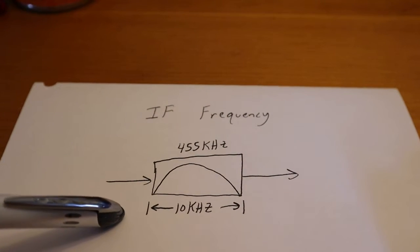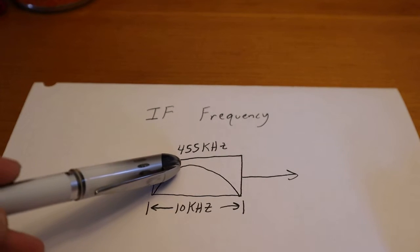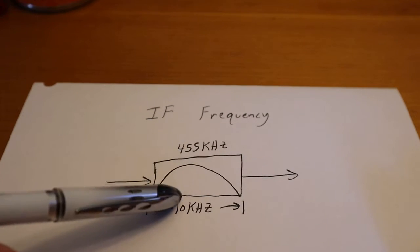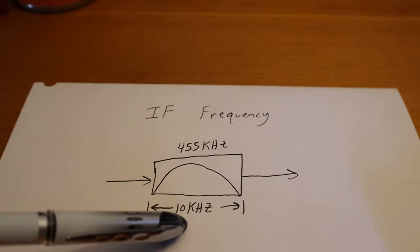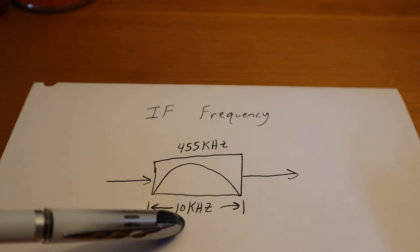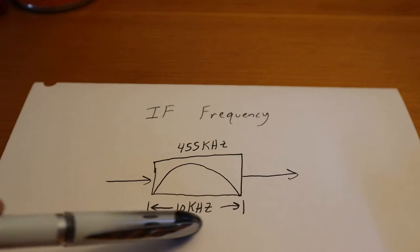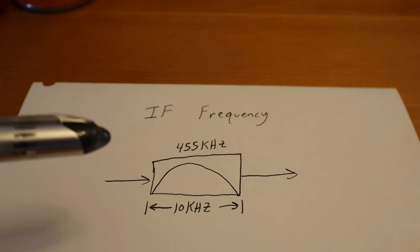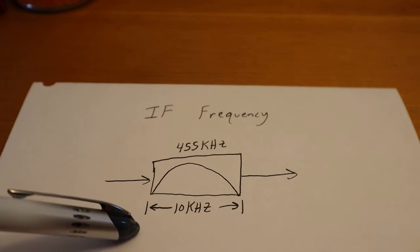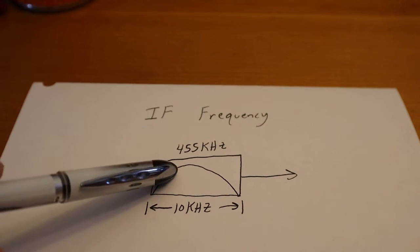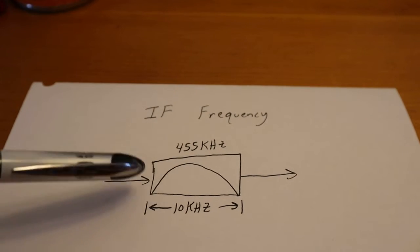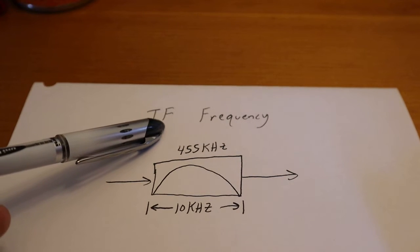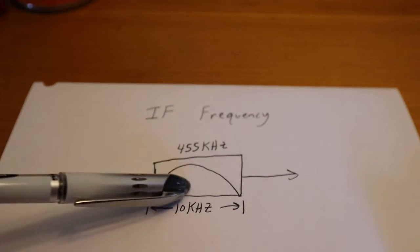We essentially now need to make a filter with a fixed center frequency and a fixed span. So if we're interested in AM radio waves, we would want the span to be about 10 kHz. That should cover the AM broadcast band's modulation bandwidth. And 455 kHz is a common IF or intermediate frequency that radio receivers use.